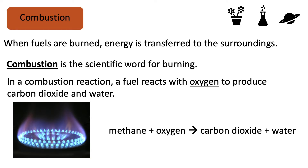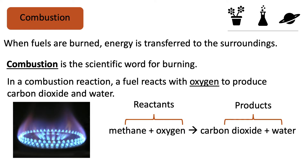Here's an example of a combustion reaction: methane, which is the fuel, reacting with oxygen to produce carbon dioxide and water. The reactants are the methane and oxygen, and the products are carbon dioxide and water. Here is the equation written as a balanced symbol equation: CH4 plus 2O2 makes CO2 plus 2H2O.